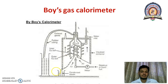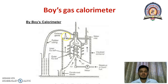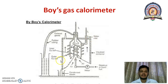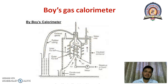Another beaker is kept at the bottom of the assembly for collecting condensed steam. At the assembly, there are three valves: one for exhausted gas, one for collecting steam, and one for water inlet. This is the simple schematic diagrammatic representation of Boyce gas calorimeter.